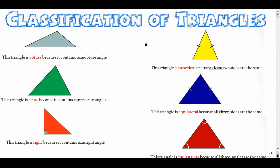In this video I'm going to go through the different ways that we can classify triangles. There are basically two ways: one is by their angles, and one is by their sides. We're going to learn some words here. You probably have heard a lot of these words when talking specifically about angles, but a lot of them also apply to triangles as well.